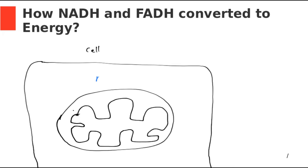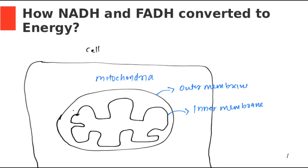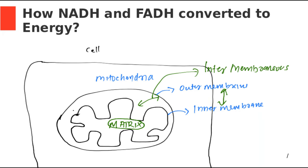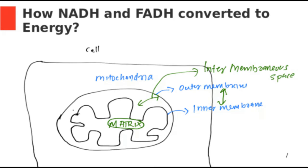Let's briefly discuss the structure of the mitochondria. Mitochondria is a double membrane structure having an outer membrane — the outermost membrane known as the outer membrane of mitochondria — and an inner one, the inner membrane of the mitochondria. The innermost portion inside the inner membrane is known as the matrix, or mitochondrial matrix. There is also a space between the inner membrane and outer membrane known as the intermembranous space.